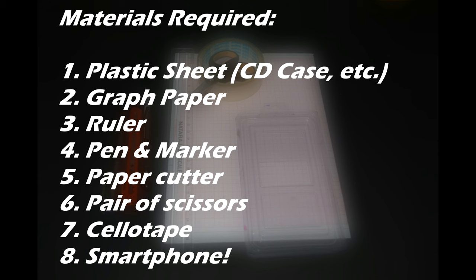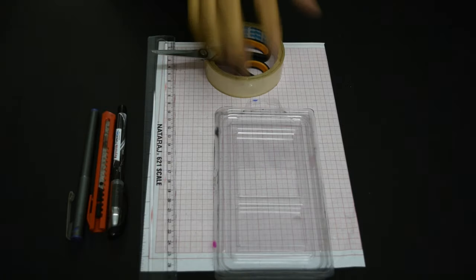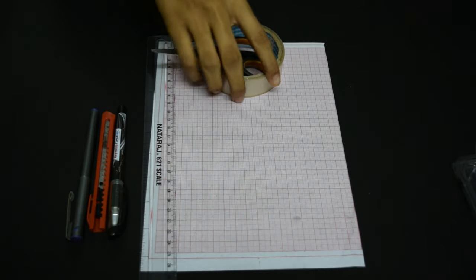A graph paper, a ruler, a pen and a permanent marker, a paper cutter, a pair of scissors, and cellotape. Of course, you also need a smartphone.